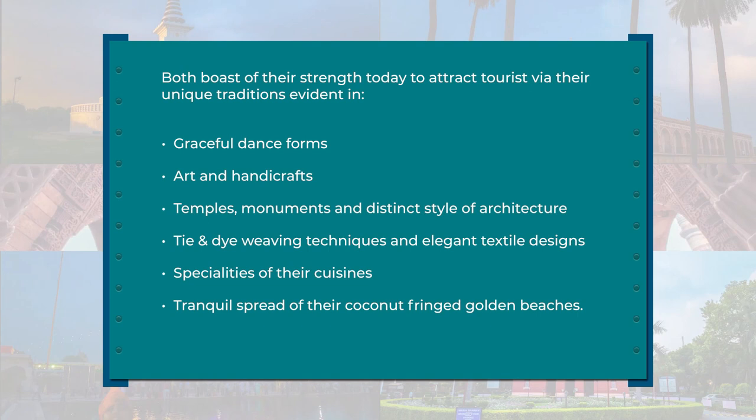The shared heritage is also visible in the distinct style of architecture seen through temples and monuments, the art of tie and die weaving and the techniques used, and the elegant textile designs unique to both countries. The cuisines of both regions are also influenced by each other. Apart from this, both regions can boast of tranquil, coconut-fringed golden beaches. The adventure-filled journeys conducted by the ancient sailors and merchants of Kalinga are preserved through the Bali Yatra festival, which was revived as a celebration — an ode to these merchants — by Orissa.